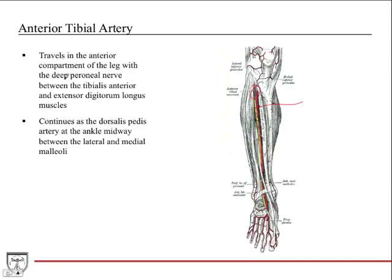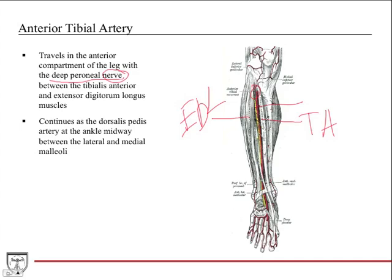The anterior tibial artery travels with the deep peroneal nerve — note: the textbook incorrectly says 'deep peroneal artery,' please correct that to nerve. This is an important spatial relationship: the nerve and artery travel between the tibialis anterior and the extensor digitorum longus muscles. On cross-sectional exams, be aware of that spatial relationship.